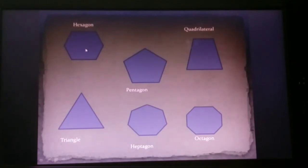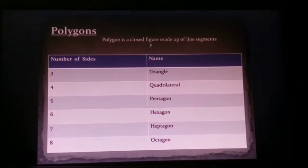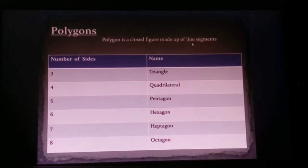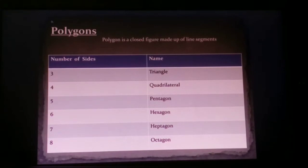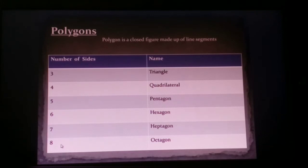Now some of the polygons. A polygon is a closed figure made of line segments. Now the number of sides: a triangle has three sides, a quadrilateral has four sides, a pentagon has five sides, a hexagon has six sides, a heptagon has seven sides, and an octagon has eight sides.